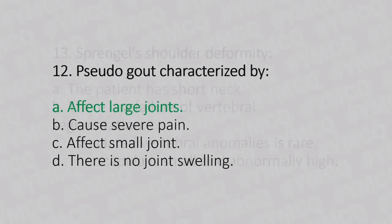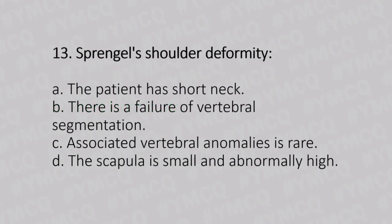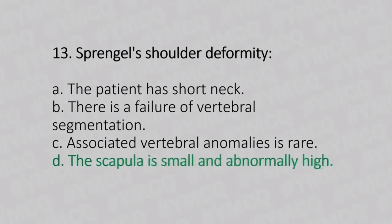Now let's move to question number 13. Sprengel's shoulder deformity. Option A: the patient has short neck. Option B: there is failure of vertebral segmentation. Option C: associated vertebral anomaly is rare. Option D: the scapula is small and abnormally high. And the answer is Option D, the scapula is small and abnormally high.